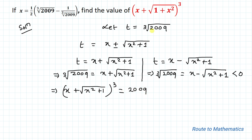So what we are asked to find is x plus the square root of (1 + x²), all cubed. The answer is x + √(x² + 1) whole cube equals 2009. I hope you understood how to solve this question. Thanks for watching — please subscribe to my channel and hit the like button for more such interesting questions. Thank you.